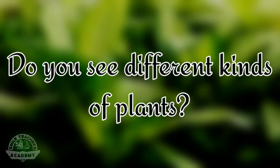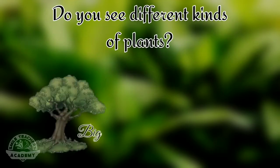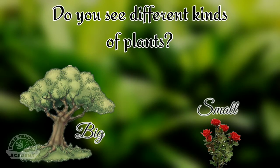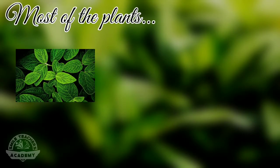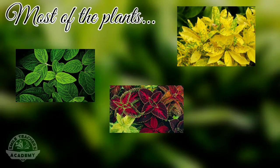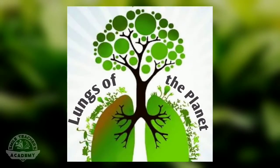Do you see different kinds of plants? Some plants are big and some are small. Most of the plants have green color leaves, but some plants have yellow, red or even purple color leaves. Plants are also called the lungs of the planet.